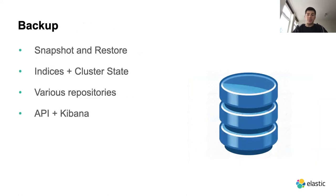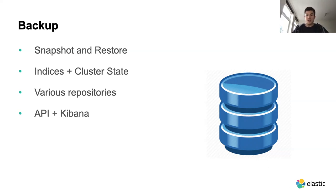When we talk about backup in Elasticsearch, we implement it through the snapshot and restore mechanism. This mechanism allows us to create frequent snapshots — backups of our cluster — covering all data streams and indices, as well as cluster states. Cluster state contains information about how many nodes and indices we have, where shards are allocated, and any templates or persistent settings that are supposed to survive full cluster restarts.